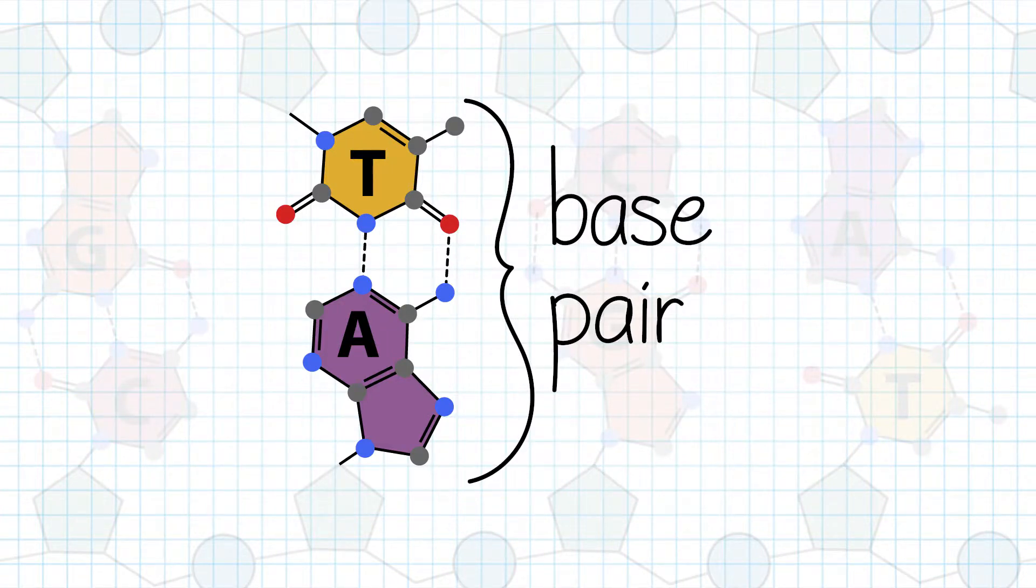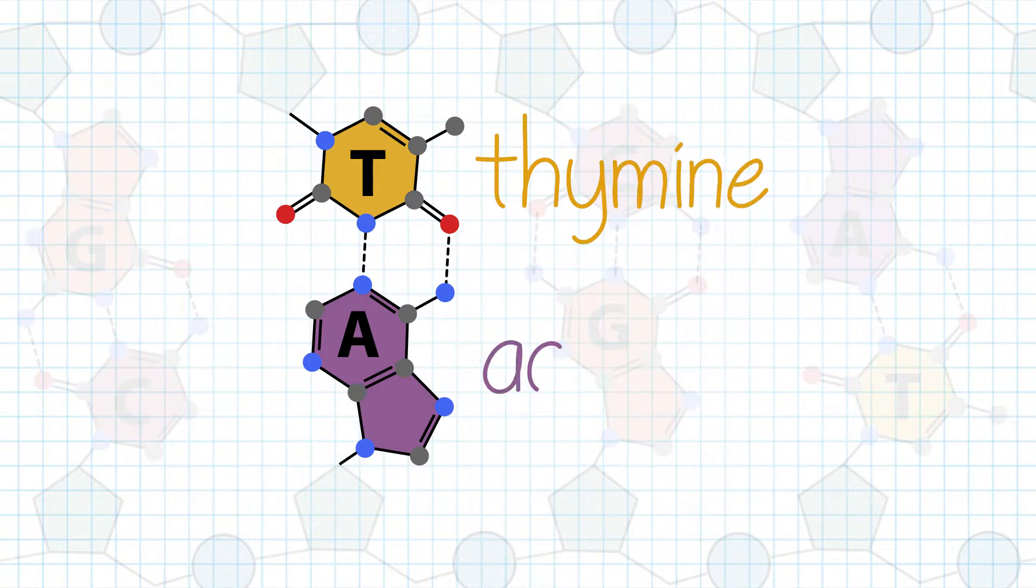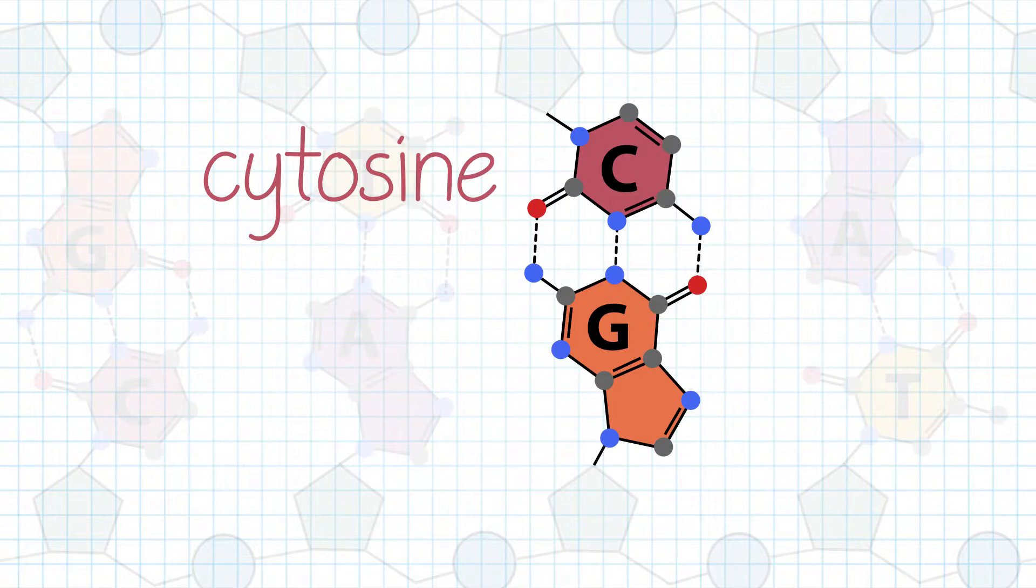The hydrogen bonding contributes to the specificity of base pairing. Thymine preferentially pairs with adenine through two hydrogen bonds, and cytosine preferentially pairs with guanine through three hydrogen bonds.